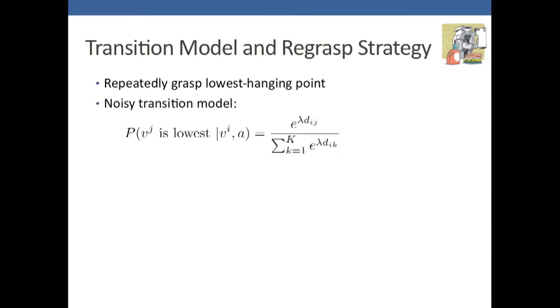The strategy is repeatedly grasping the lowest hanging point. However, this is still noisy. The robot doesn't always grab the lowest hanging point, and we don't always even know what the lowest hanging point is. This distribution is essentially a softmax, which reflects how well the simulation matches reality. The only parameter here is lambda, which is tunable.